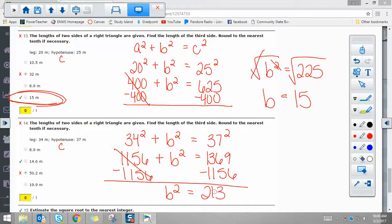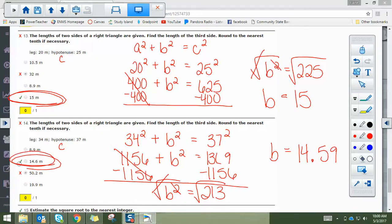Again, this is not my answer. I need to square root both sides. That's the opposite of squaring. They're inverse operations. So I square root 213, and I get 14.59, which you can see rounds to 14.6.